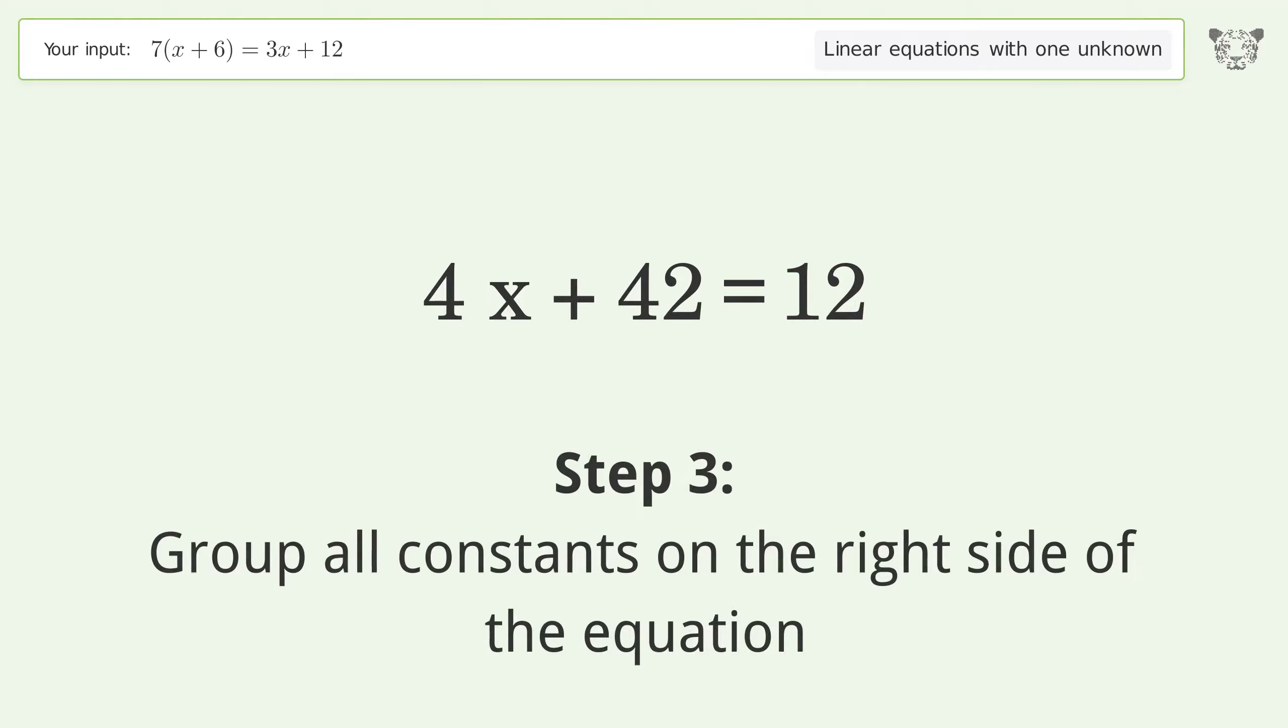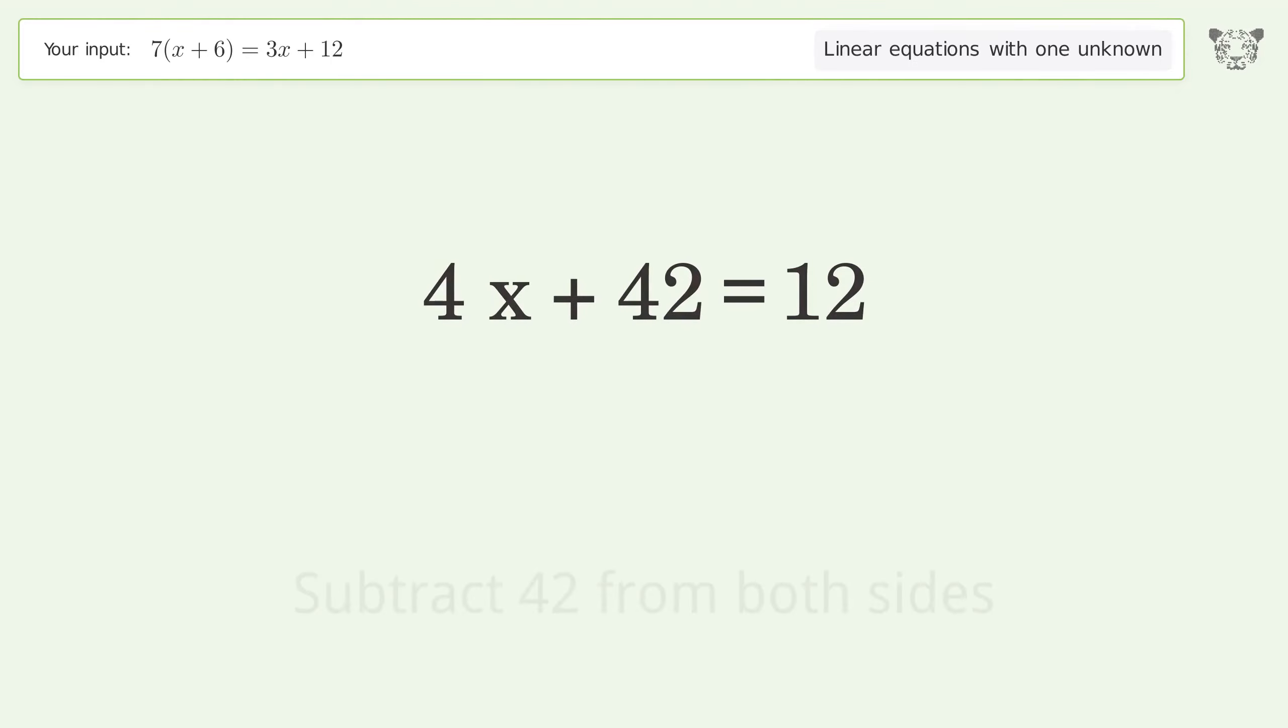Group all constants on the right side of the equation. Subtract 42 from both sides. Simplify the arithmetic.